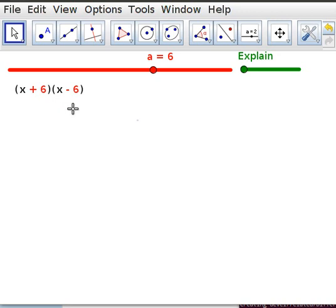I'm going to talk about the difference of perfect squares because it's very important to factorising something that you have completed the square on. But I'm going to start by going backwards.